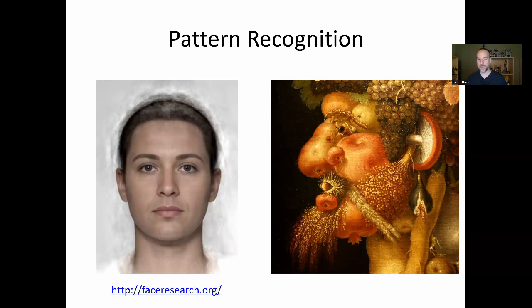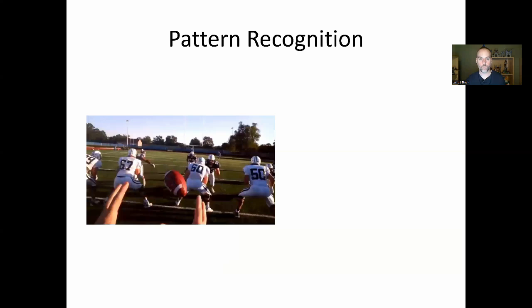Another example: a famous artist made faces out of objects — here a face made out of fruits and vegetables. If we couldn't see the pattern we'd just see individual things like grapes or a mushroom. But our brain is always extracting patterns, and so we recognize that they make a face.